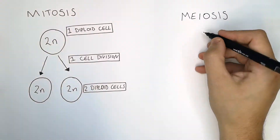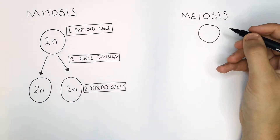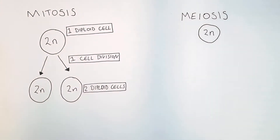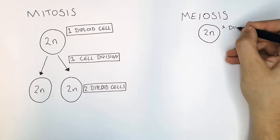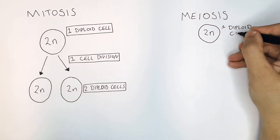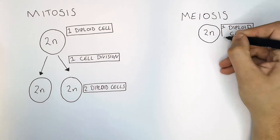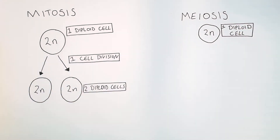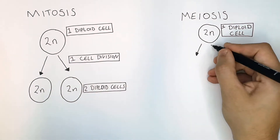Meiosis is different. However, it also starts off with one diploid cell with two sets of chromosomes — one diploid cell which has got two sets of chromosomes — and this diploid cell will divide.